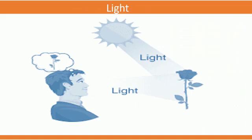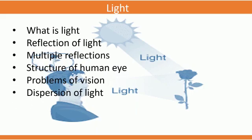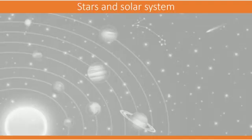The next topic is Light. Under Light, we will discuss: What is light? What is reflection of light? What are the different types of reflections? How do multiple reflections take place and how are multiple images useful? We will also discuss the structure of the human eye, problems of vision, and dispersion of light.